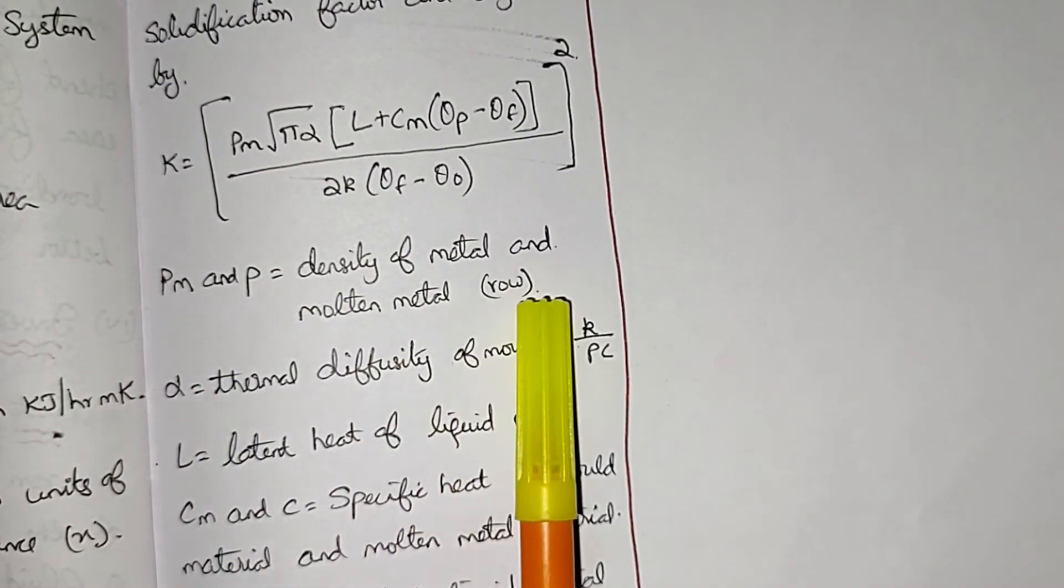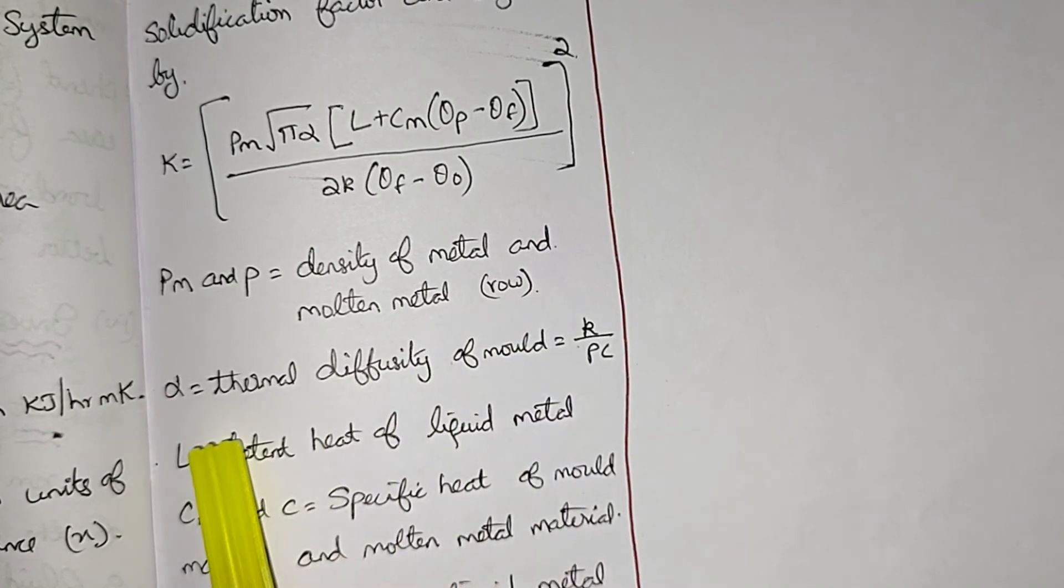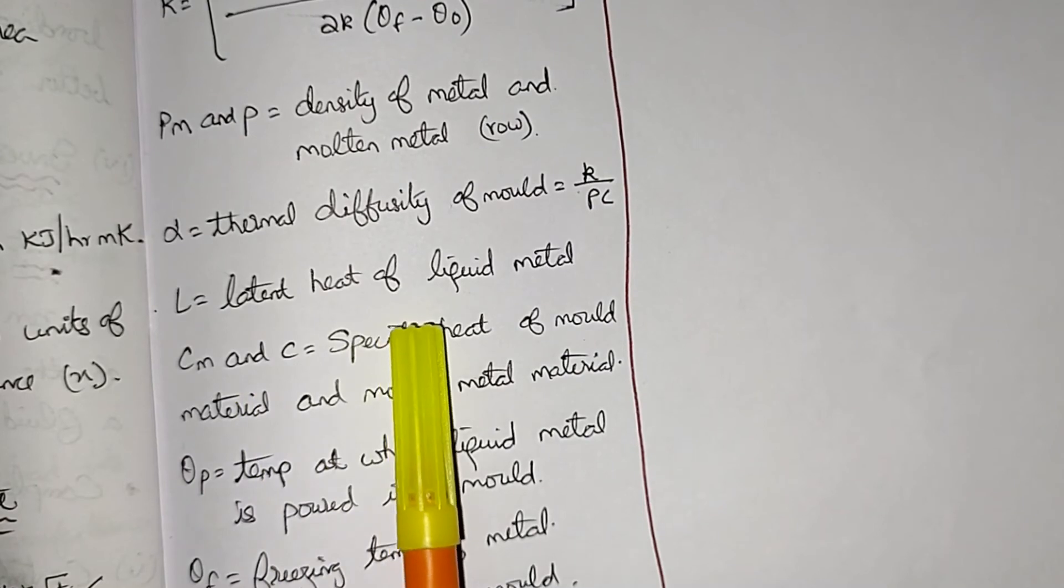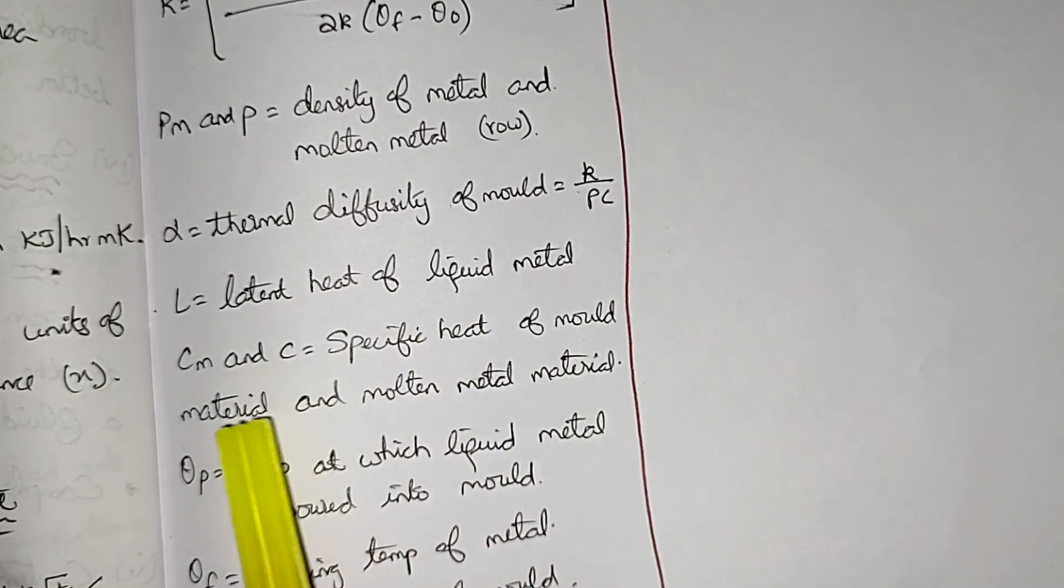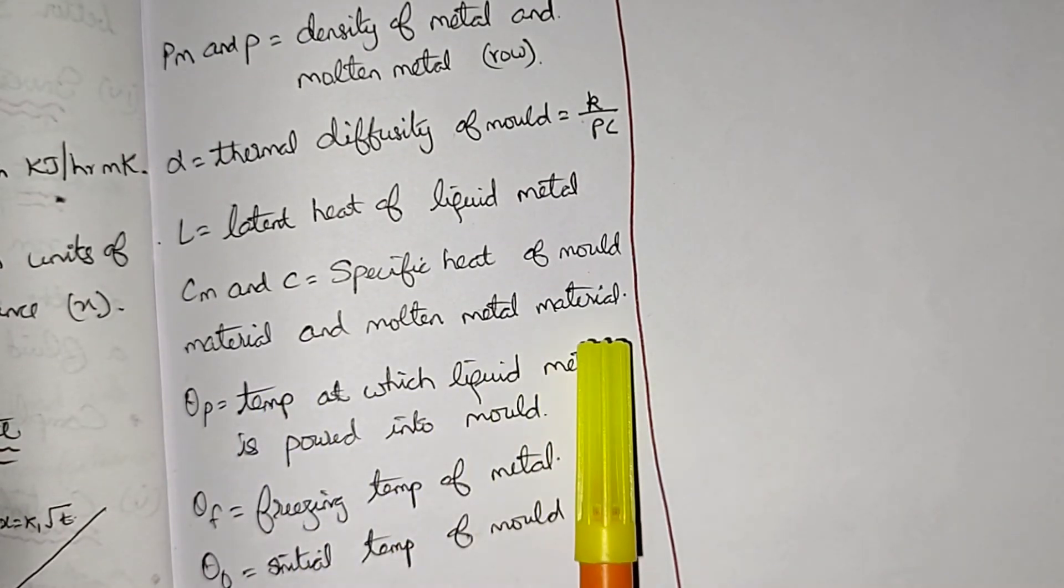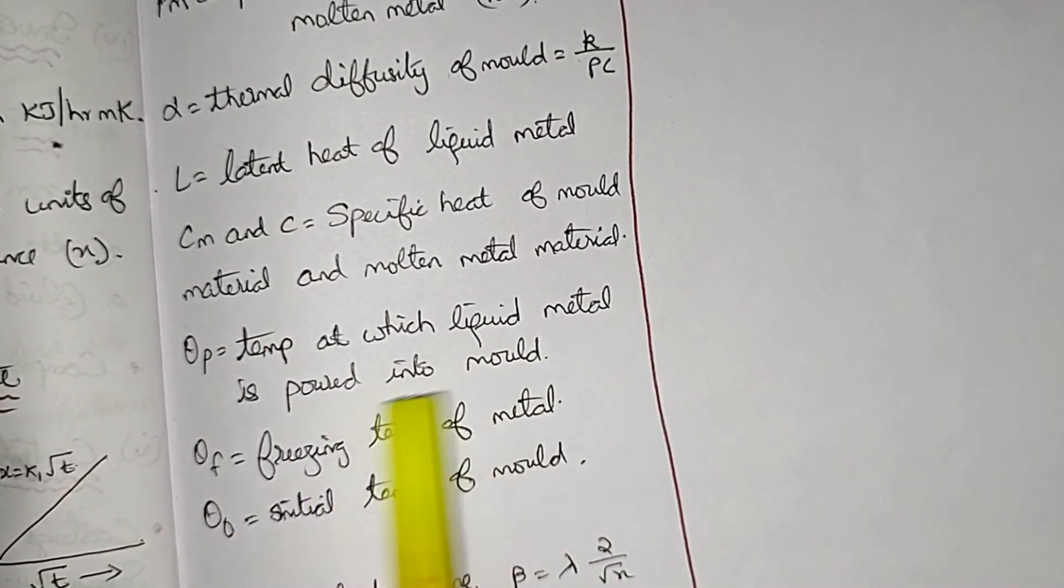So ρm and ρ is density of metal and molten metal. α is thermal diffusivity of mold, K by ρc. L is latent heat of liquid metal. Cm and c is specific heat of mold material and molten metal material. θp is temperature at which liquid metal...